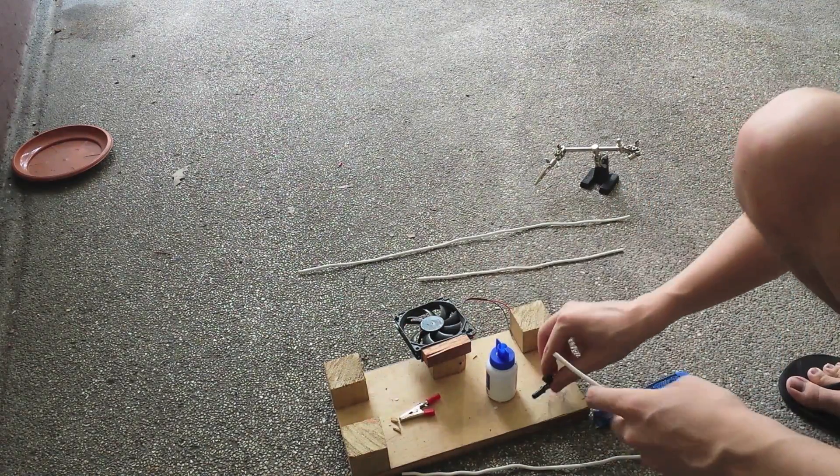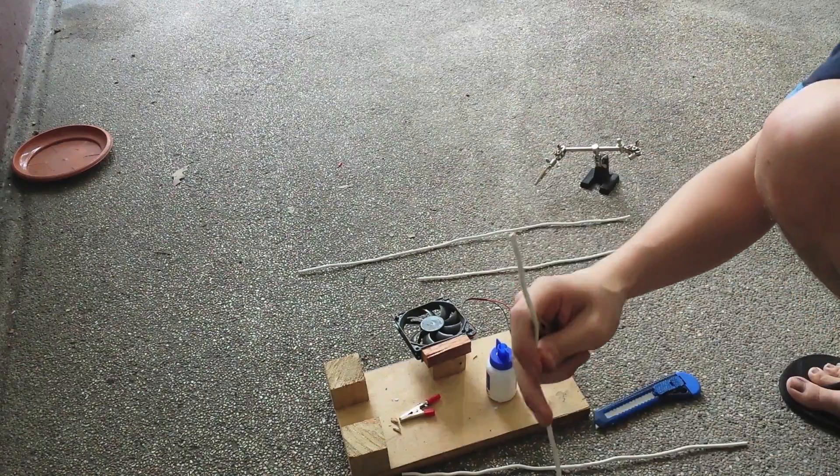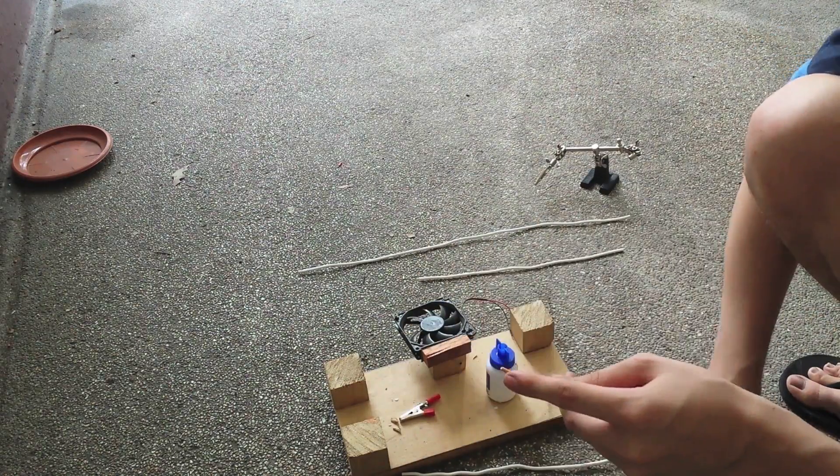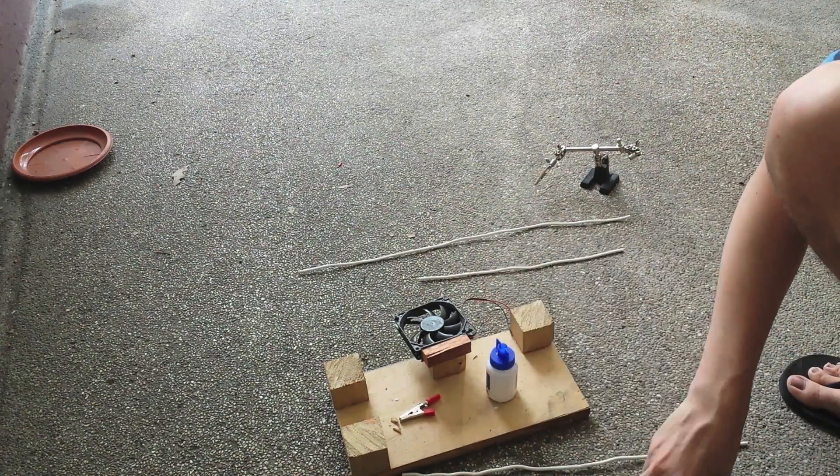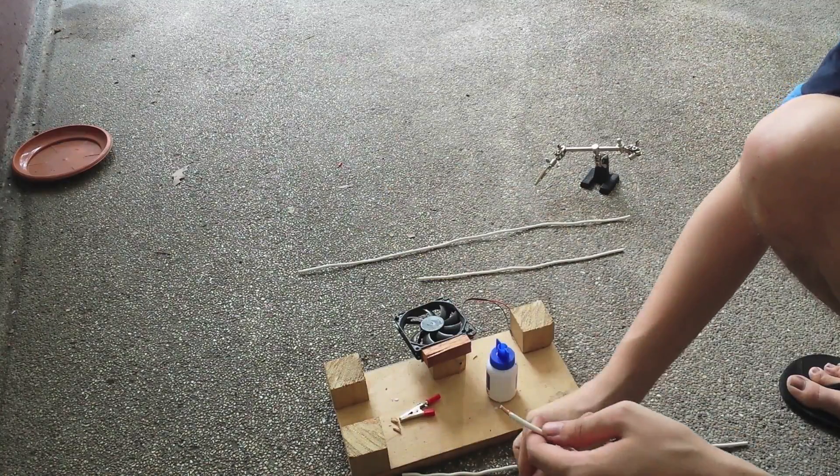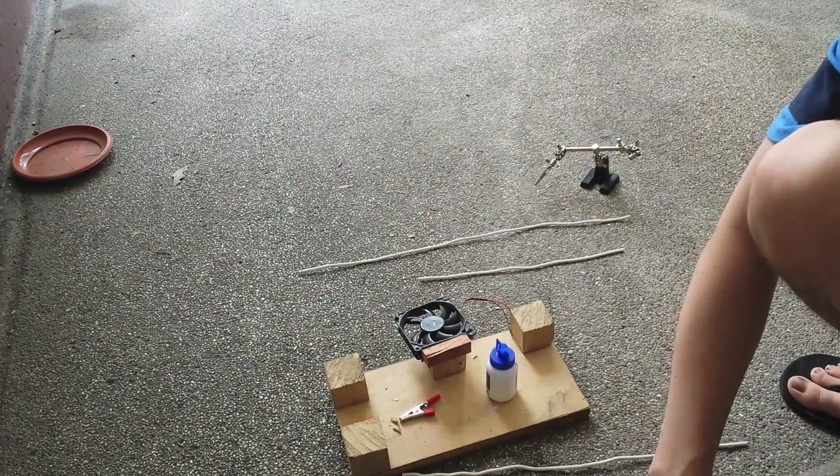Now while that glue is drying, I'm going to attach my crocodile clips to the wire. I'm going to strip off the end of the wire a little bit in case I decide to solder these later. It's pretty simple - I've just scraped off some of the plastic coating with a knife, and then all you need to do is take your crocodile clip and undo the screw.